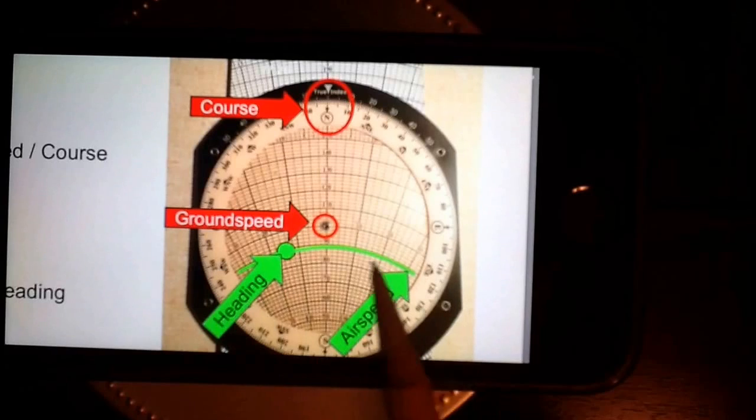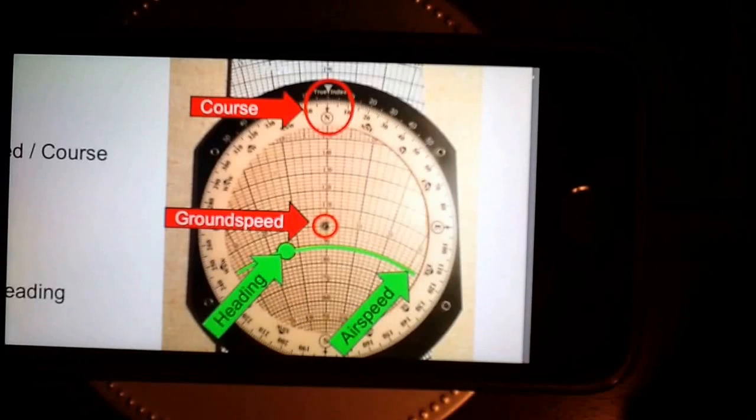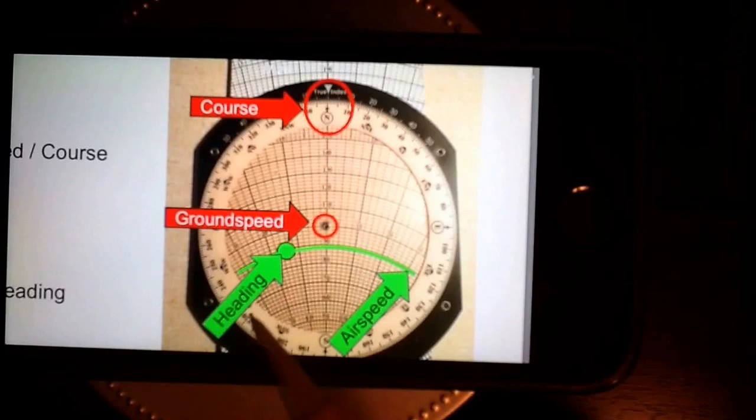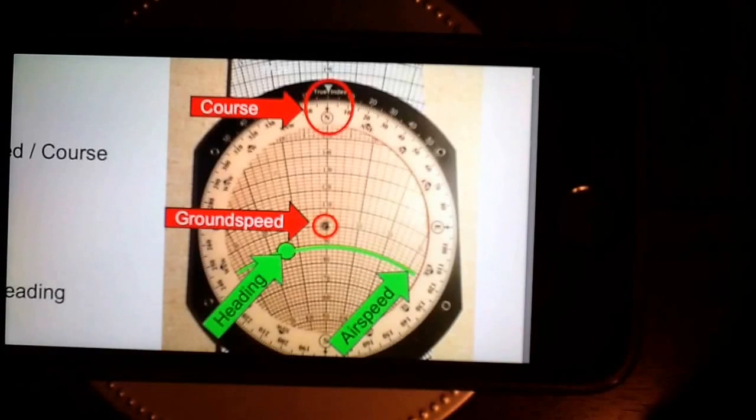The items in green are what the aircraft is doing through the air. Its airspeed, for instance, and its heading, both of which are going to be affected by how the wind is blowing.